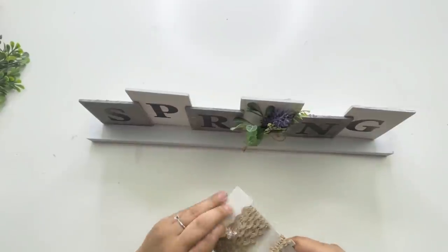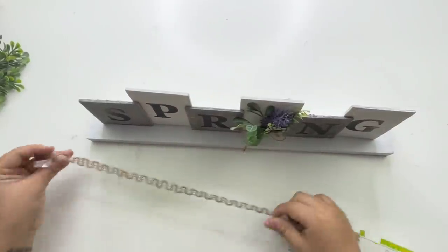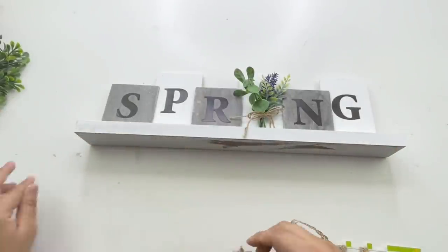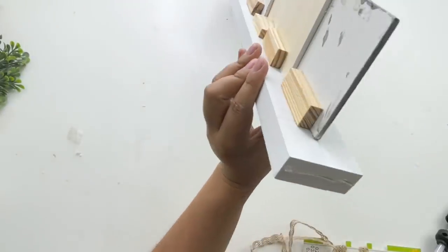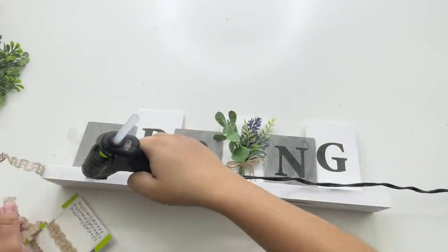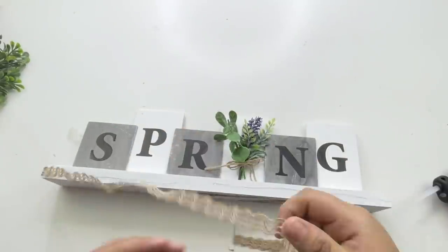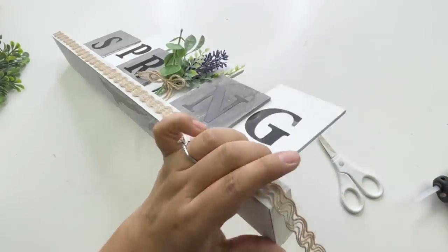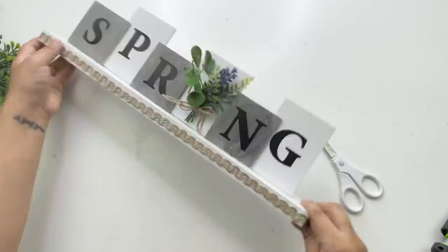To finish it off, I decided to add some of this beautiful Dollar Tree burlap ribbon, and I'm going to glue it all around the bottom piece. You don't have to, I just decided that I needed something else. I felt like it looked too plain. But other than that, that is it for this beautiful tabletop spring decor sign.